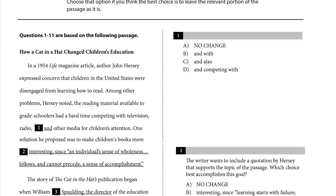So question number one — we're listing the competition for reading: television, radio, and other media for children's attention. This looks good. It looks like parallel construction — we have a noun, a noun, and a last noun. We don't need another preposition or an 'also competing' — that would be redundant. So this one is no change. The answer is A.